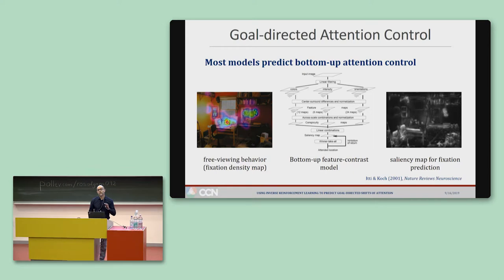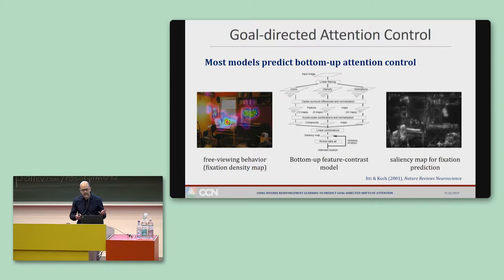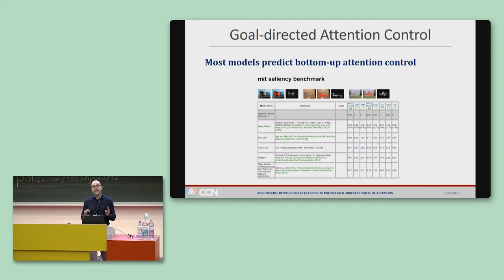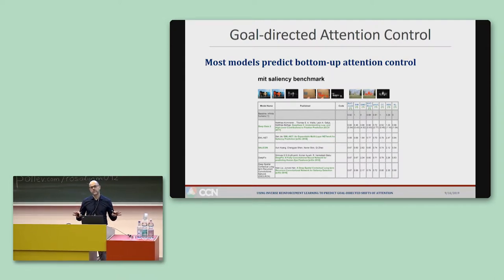However, most computational models of attention control predict only free-viewing behavior, typically using bottom-up feature contrast to compute saliency maps. Although this is a very active literature, complete with competitions and leaderboards for the best models, keep in mind that all these models predict attention control mainly from the visual input, which is very different from goal-directed behavior.